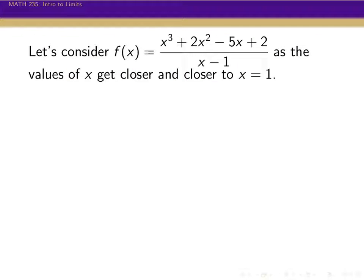So let's start off with an example. Here's a nice rational function: x cubed plus 2x squared minus 5x plus 2, divided by x minus 1. What we want to think about with this function is what happens to it as we get closer and closer to the value x equals 1. The first thing to note is that because we're dividing by x minus 1 on the bottom, we can't actually just plug 1 into this function.